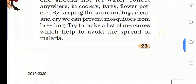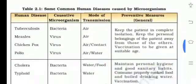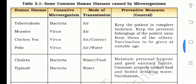Try to make a list of measures which help to avoid the spread of malaria. Some common human diseases caused by microorganisms: Tuberculosis is caused by bacteria, and the mode of transmission is air. Malaria, chickenpox and polio are caused by viruses. These are all airborne diseases.